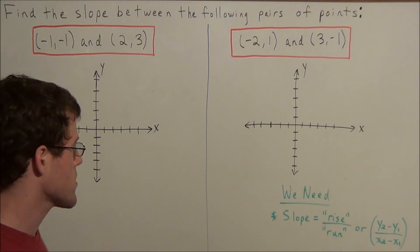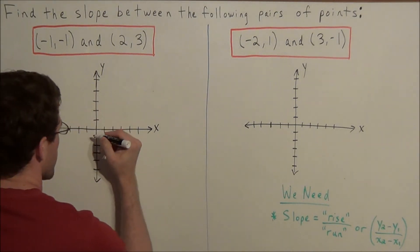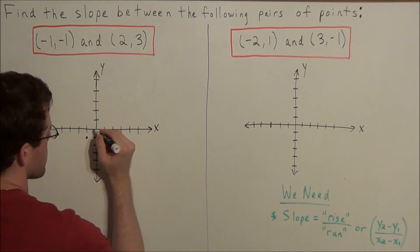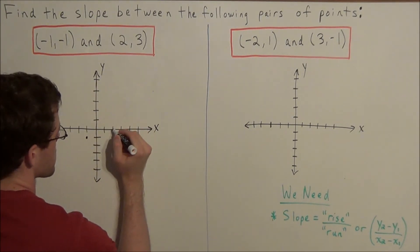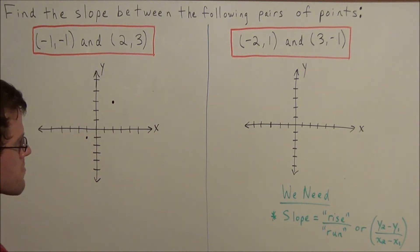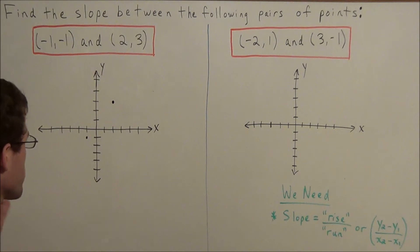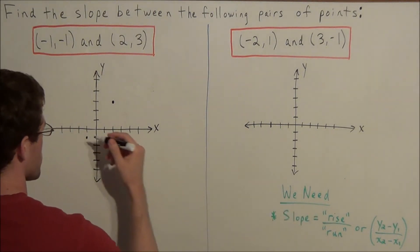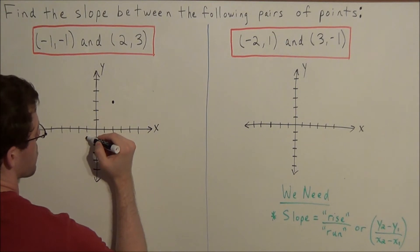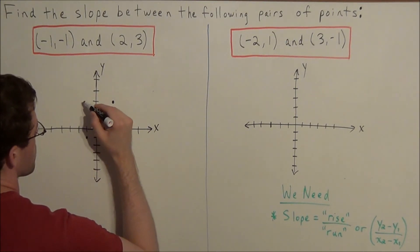We're going to use this concept. We start by plotting the point negative one, negative one, and we're also going to plot the point two, three — so we're going to the right two and up three. Using the concept of rise over run, we can find the slope between these two points by counting the rise. Starting at negative one, negative one, we're going to rise one, two, three, four.